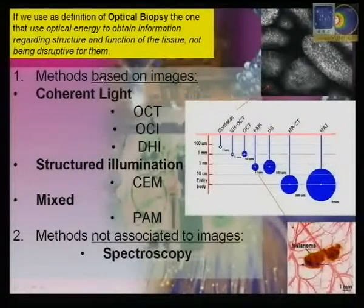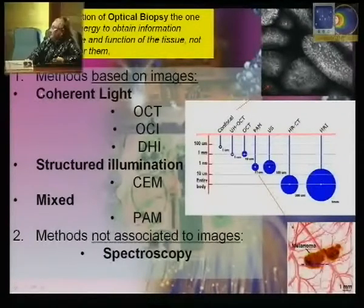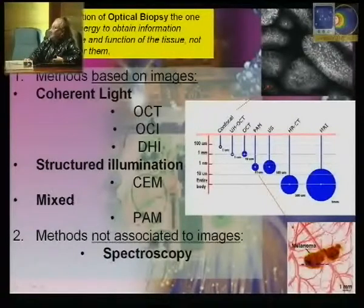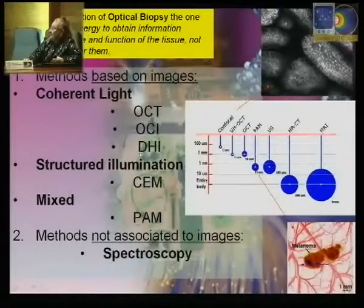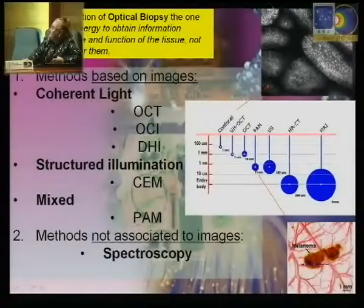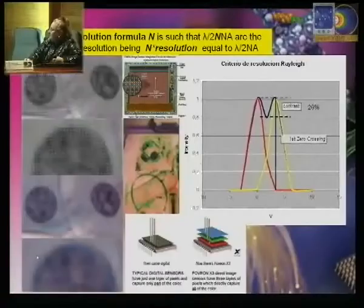Image-based systems can be divided according to whether they use coherent light, non-coherent structured light, or mixed technology. Coherent light systems include optical coherence tomography, optical coherence imaging, and holography imaging. Structured illumination includes mainly confocal endomicroscopy. Mixed technologies include photoacoustic microscopy (PAM). Methods not associated with images are the spectroscopic methods.